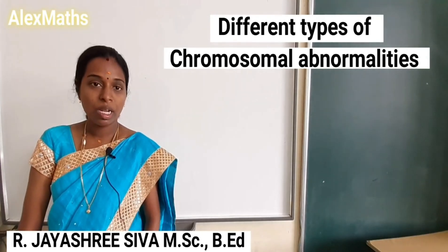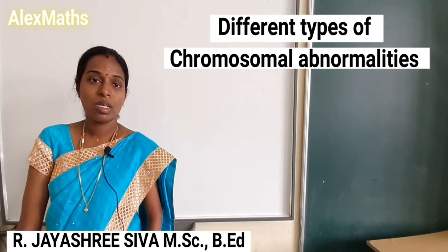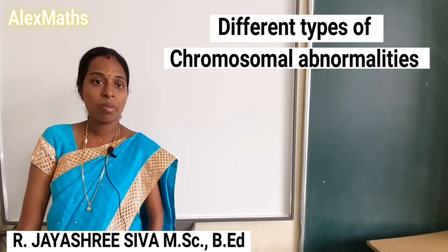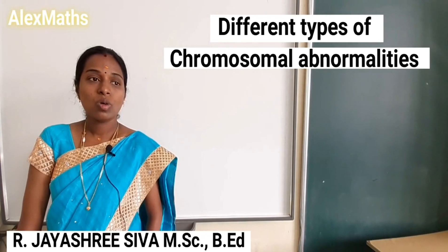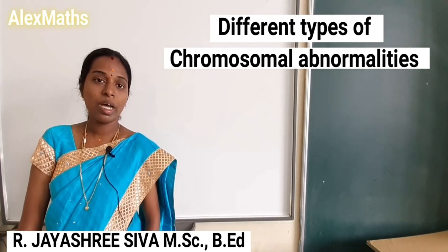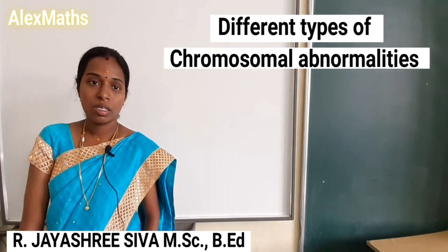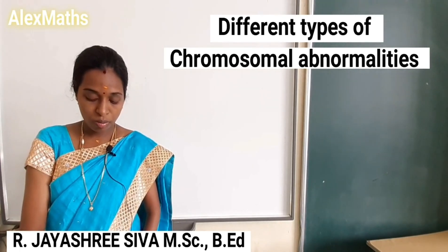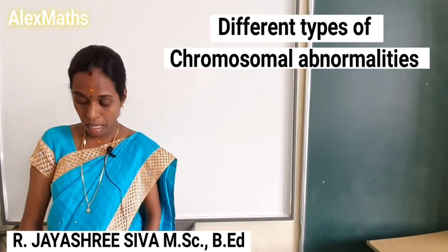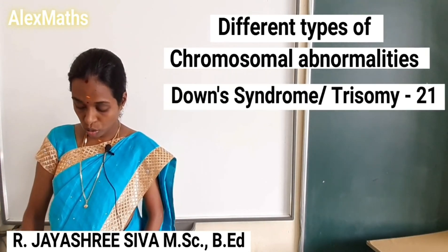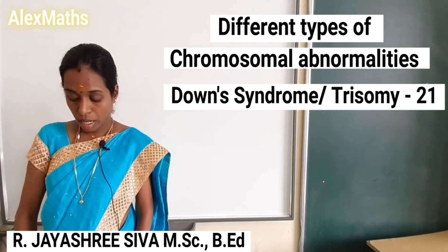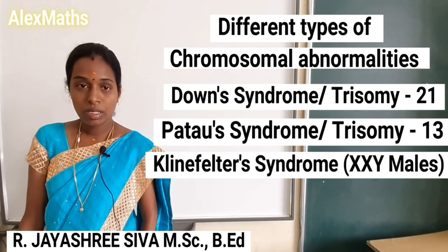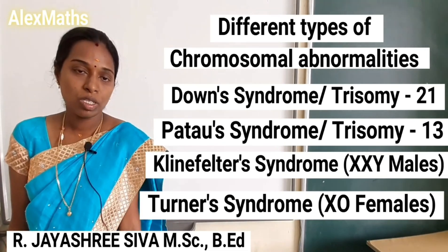Discuss the different types of chromosomal abnormalities. Chromosomal abnormalities occur when chromosome structure or arrangement changes. Normal chromosomes have standard structure and function; abnormal means they are altered. The chromosomal abnormalities include: Down syndrome (Trisomy 21), Patau syndrome (Trisomy 13), Klinefelter syndrome, and Turner syndrome. These are diseases under chromosomal abnormalities.